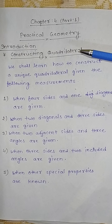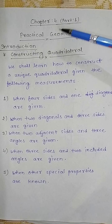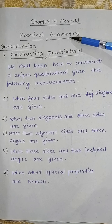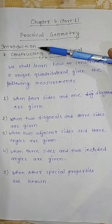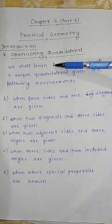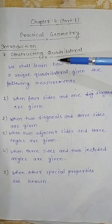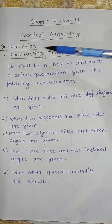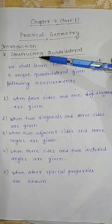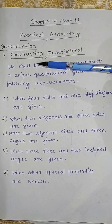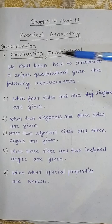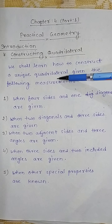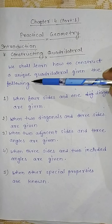Hello everyone. Here I am going to start a new chapter, that is Chapter Number 4: Practical Geometry. Now we will start from the introduction. In this chapter, we will discuss how to construct a quadrilateral where some measurements are given. We shall learn how to construct a unique quadrilateral given the following measurements.